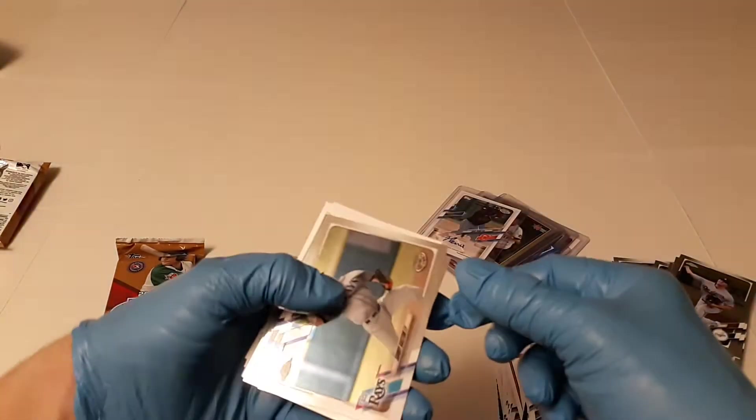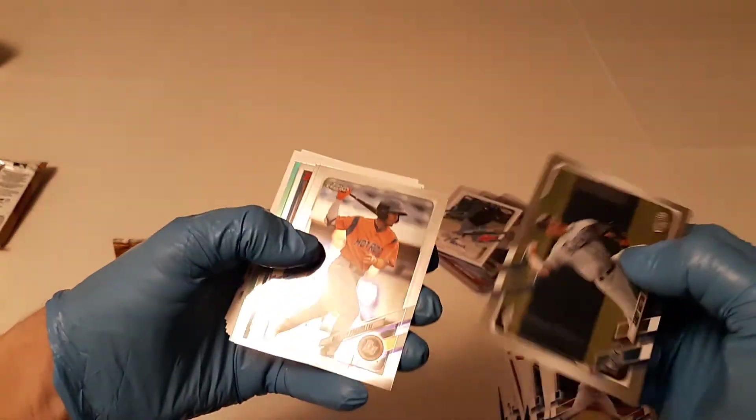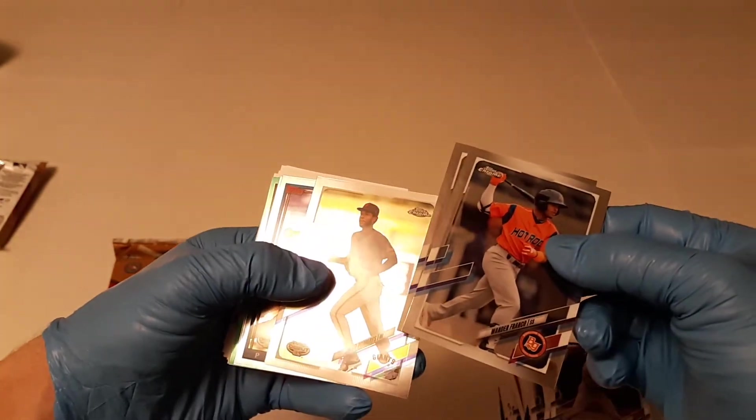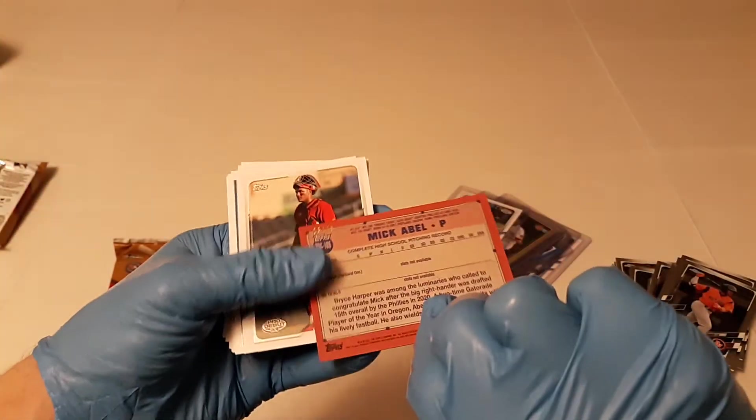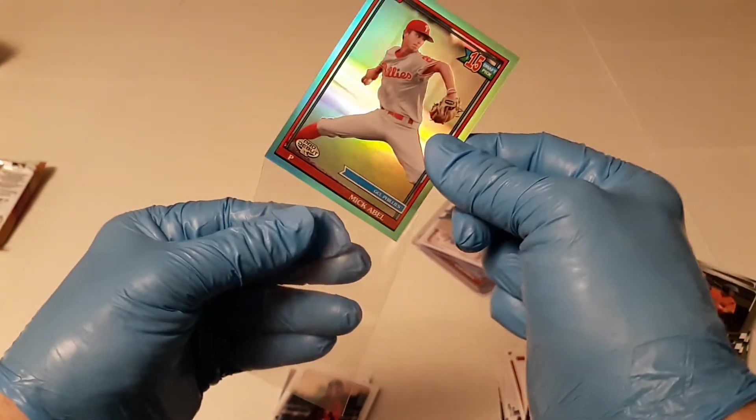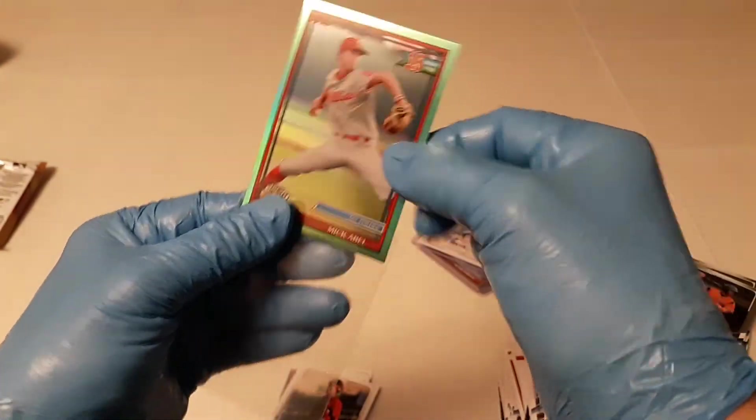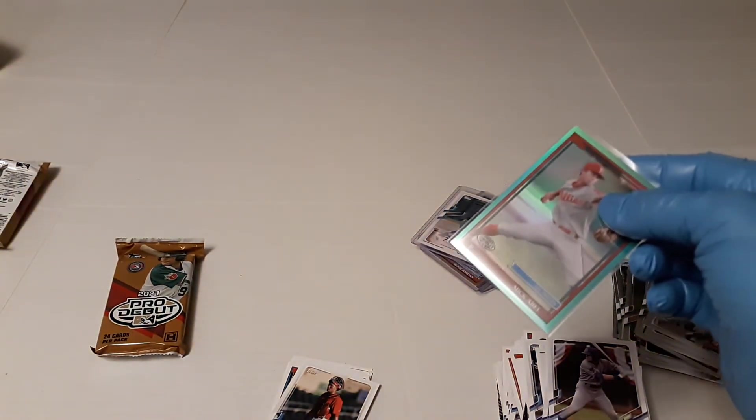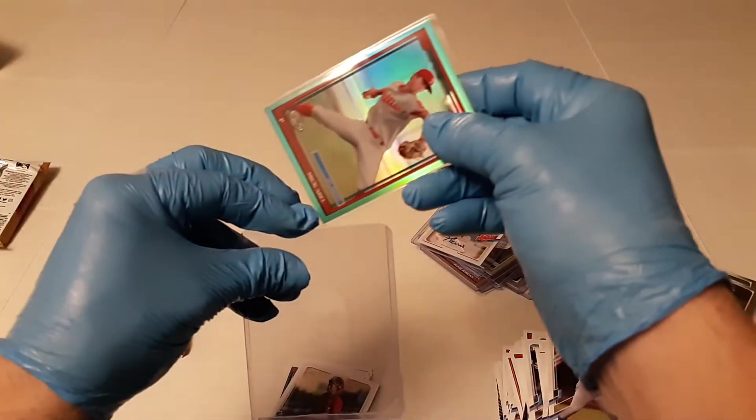Here's our chrome. We got Sandy Gaston. Ooh, look at that. Wander Franco, and Gyro Palmaris, CJ Van Eyck, Blaze Jordan, and there's Mick Abel, and that's an Aqua, or a Teal, all numbered 23 of 75. So we are really, really, really, really doing well. This might be one of the best boxes of pro debut I've done, too.